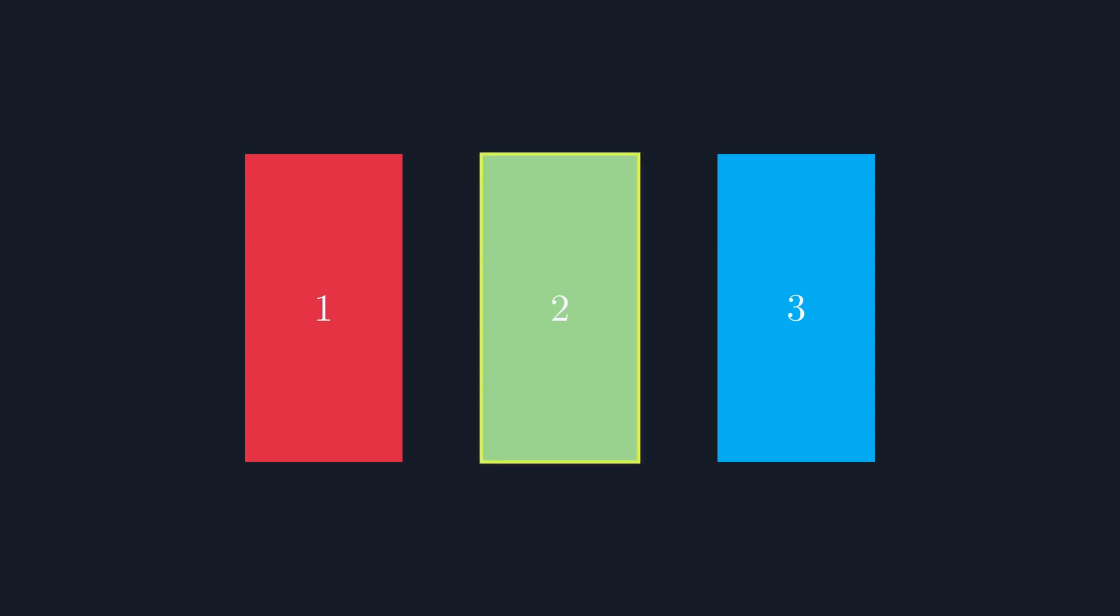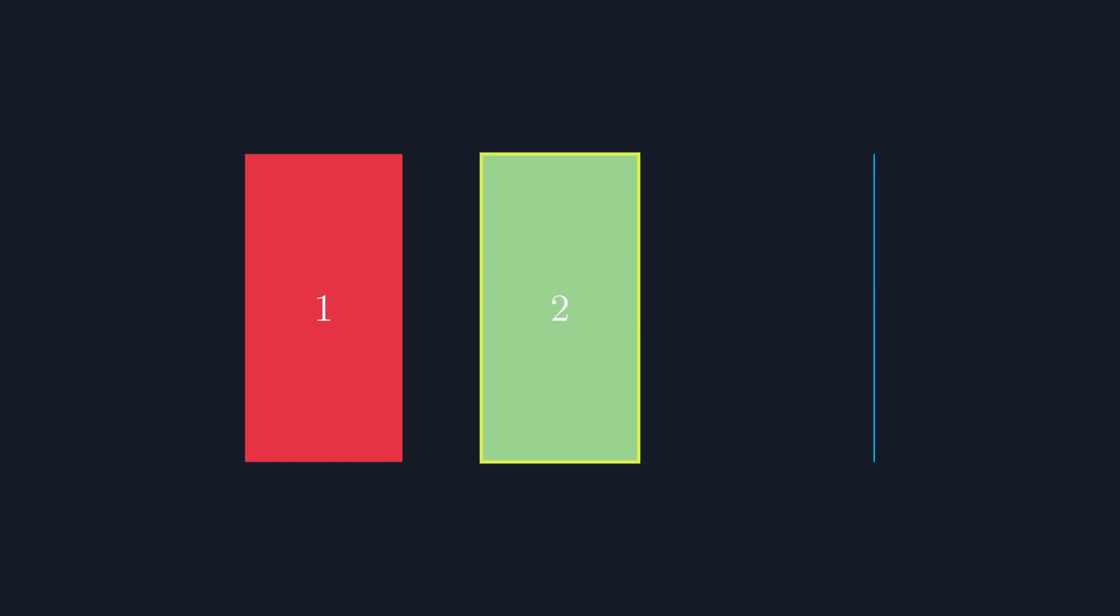After selecting a door, the game show host opens one of the other two doors and shows you that it doesn't have the money behind it. Then, you'll be asked if you wish to stick with the door you originally chose or the other closed door. The question is whether you're better sticking with the current door or if you're better off switching.